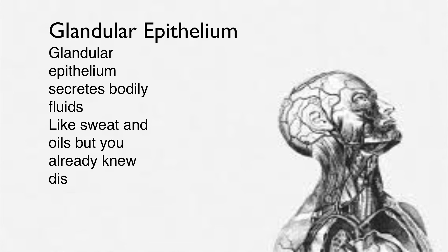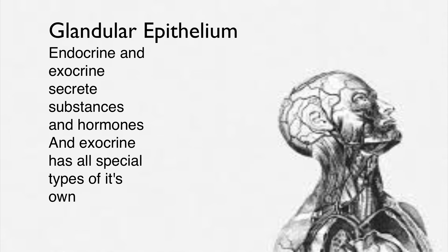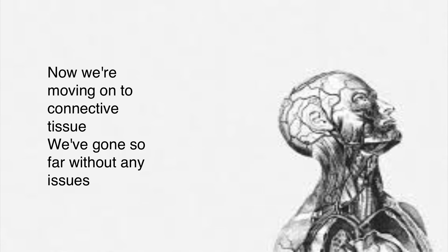Glandular epithelium secretes bodily fluids like sweat and oils. Endocrine and exocrine secrete cell systems and hormones, and exocrine has all types of its own.